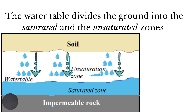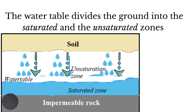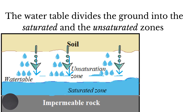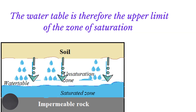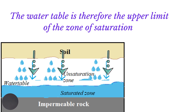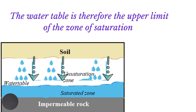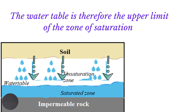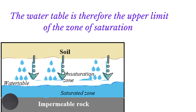Below the water table we have the saturated zone, where all of the pore spaces are filled with water. We can therefore define the water table as the upper limit of the zone of saturation, or the level below which all the cracks and pore spaces are filled with water.